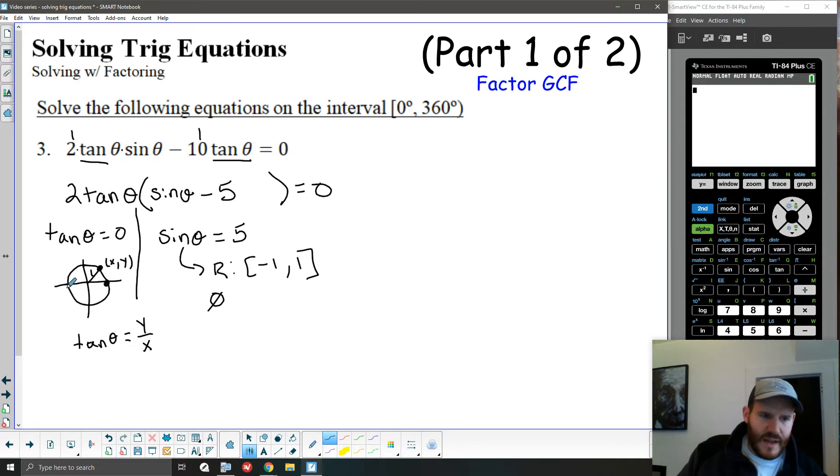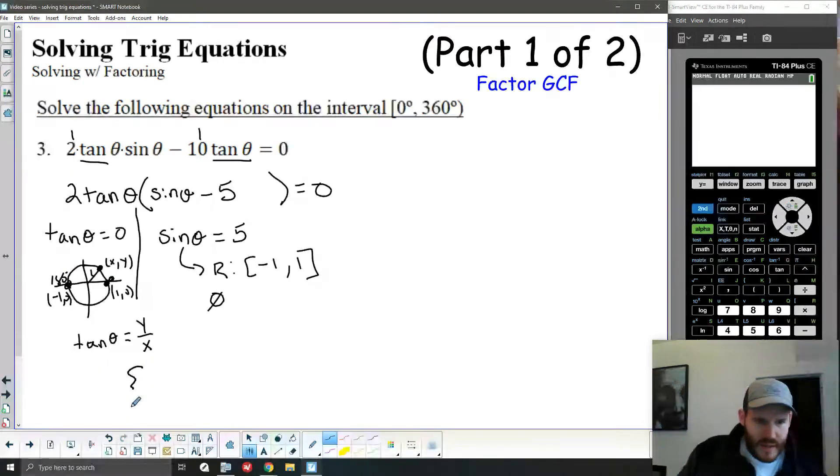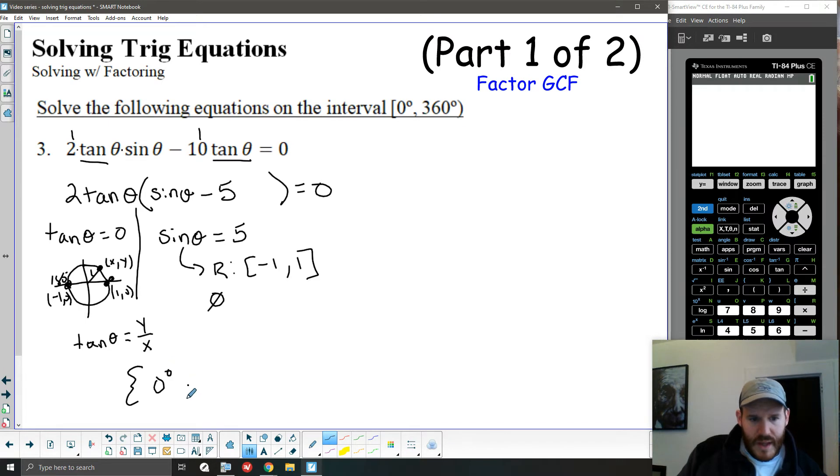So the values that will make tangent zero are really the values where the y coordinate is zero. And that happens in two places. So that happens at the coordinate one, zero, and at the coordinate negative one, zero. And the angle values of those positions are zero degrees and 180 degrees.